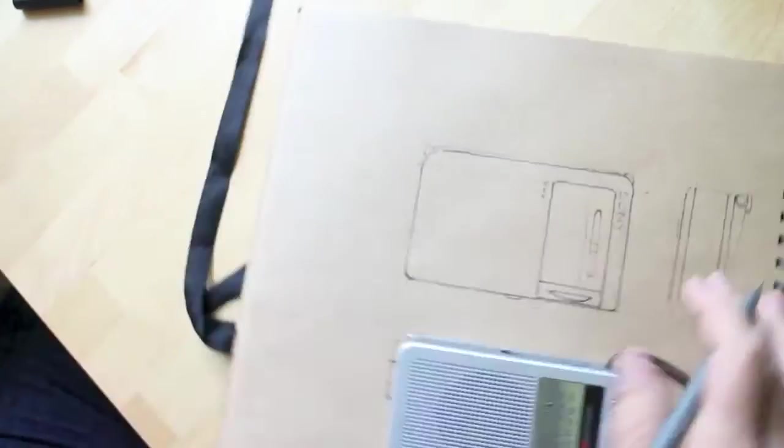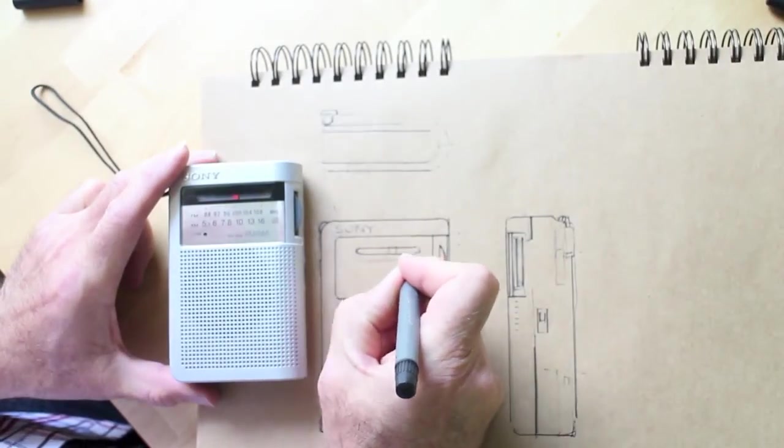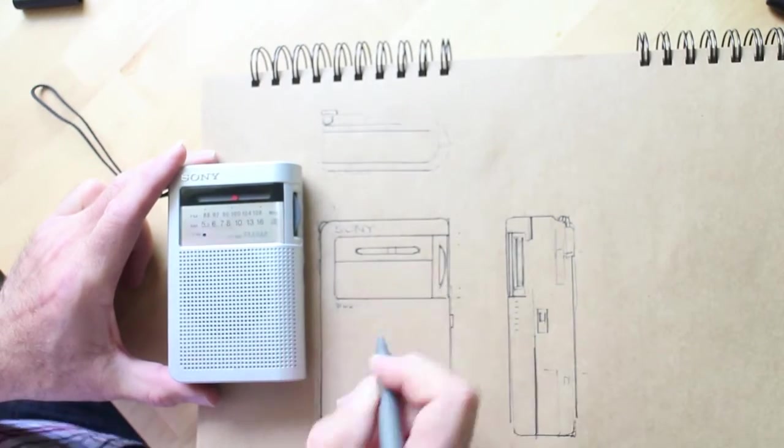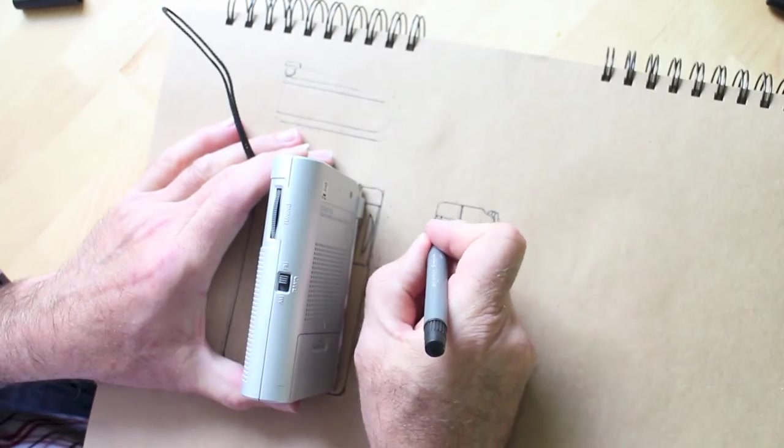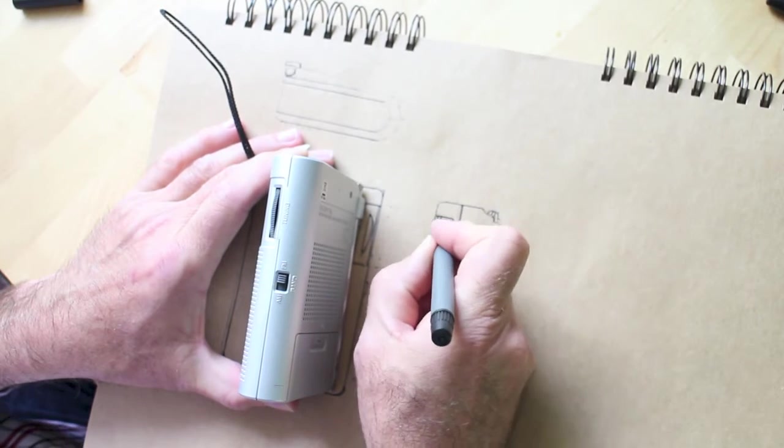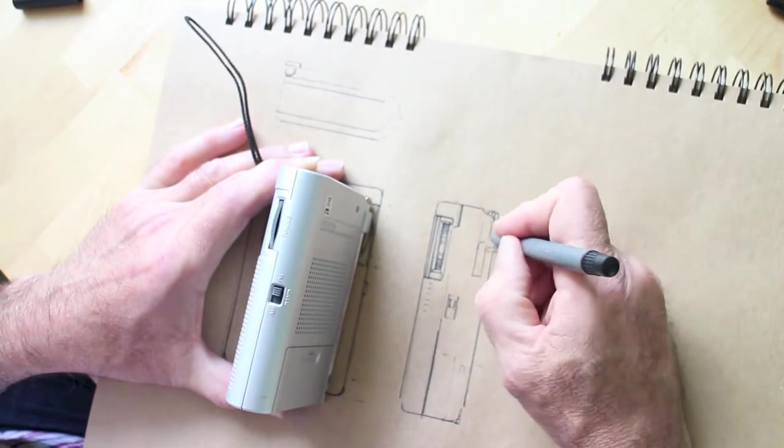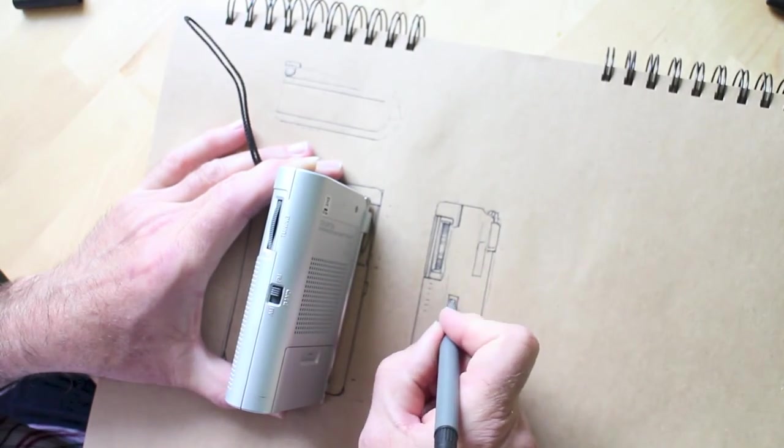Looking at the object, firming in the outline, firming in some of the features from those early construction lines, putting the curves on the corner, the detail of the areas where we'd see the tuning dial. Looking at how the object actually closes in, the brake line between the two halves.